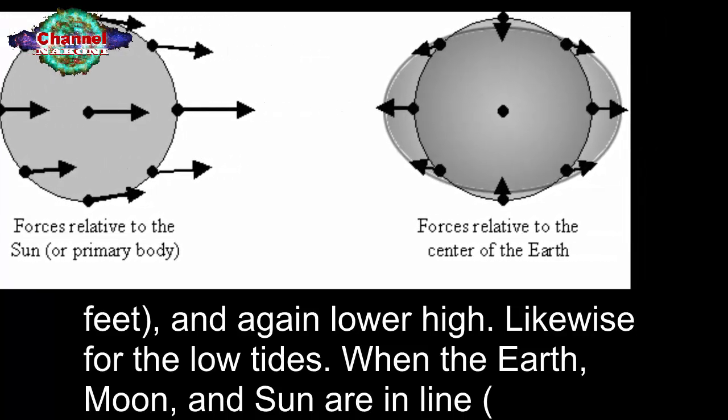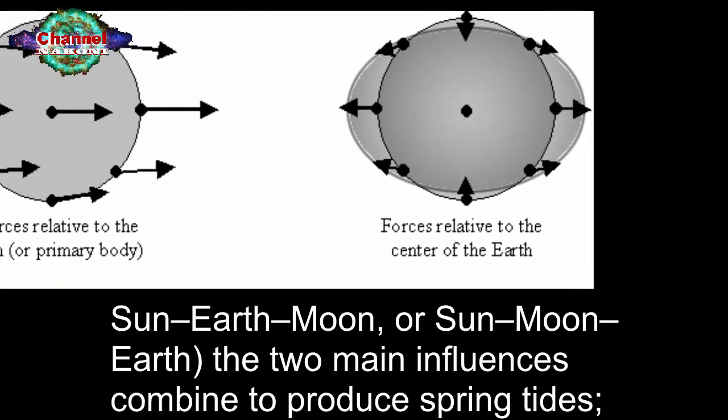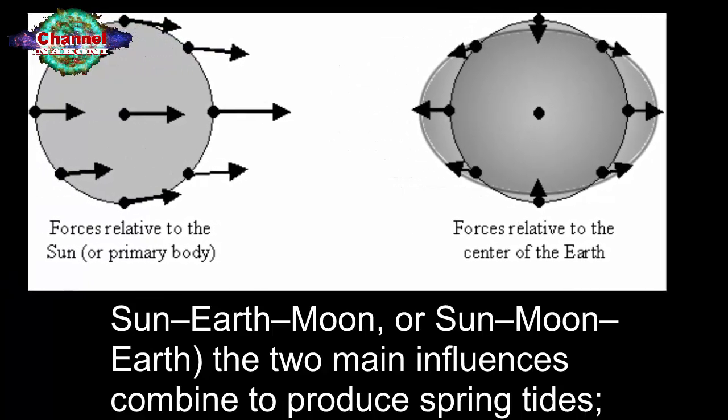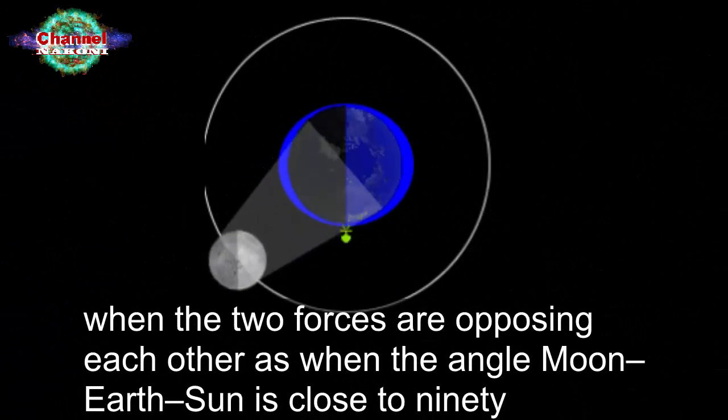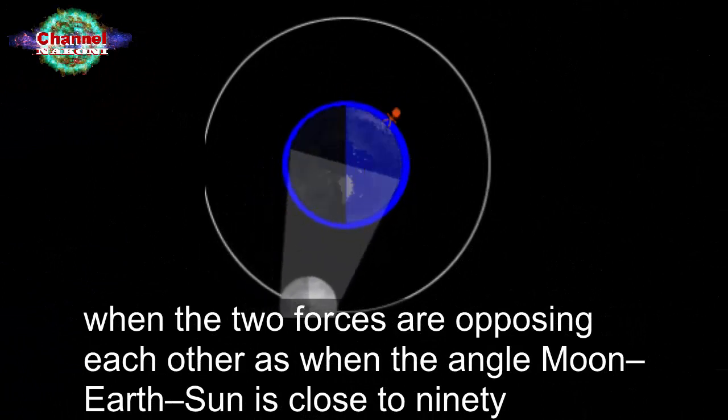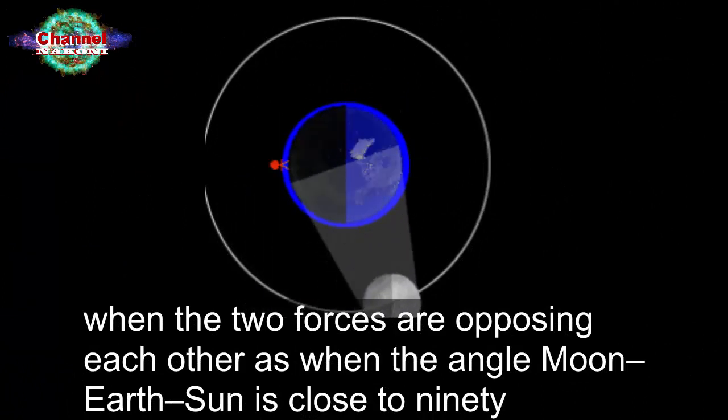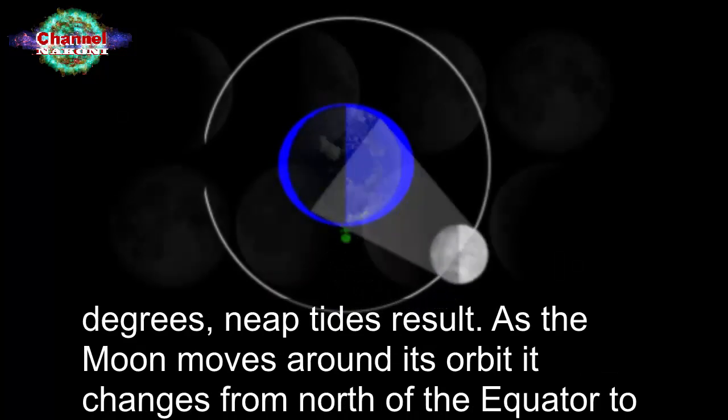When the earth, moon, and sun are in line - sun-earth-moon or sun-moon-earth - the two main influences combine to produce spring tides. When the two forces are opposing each other, when the angle moon-earth-sun is close to 90 degrees, neap tides result.